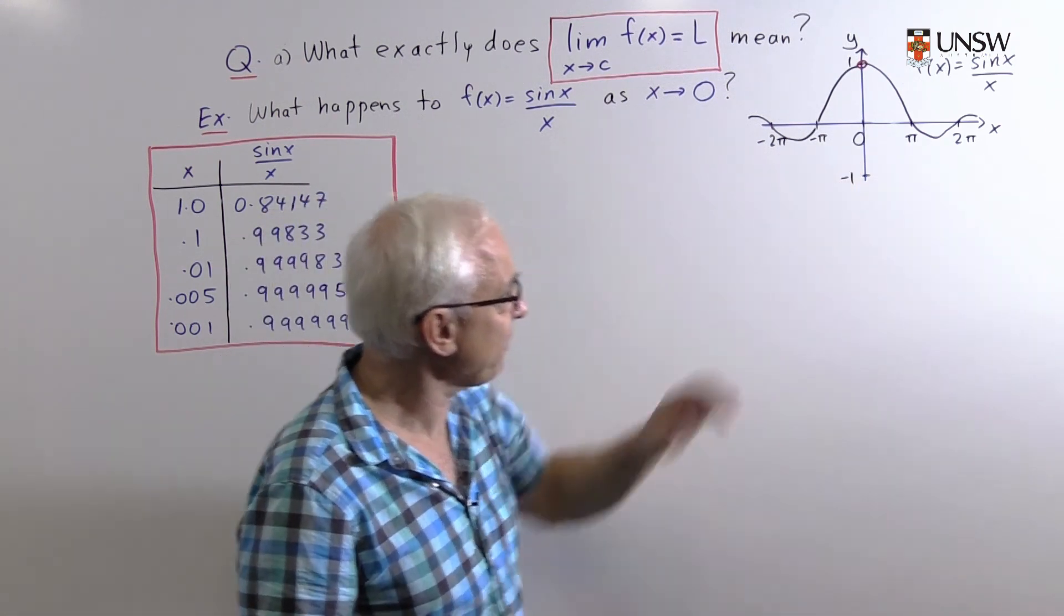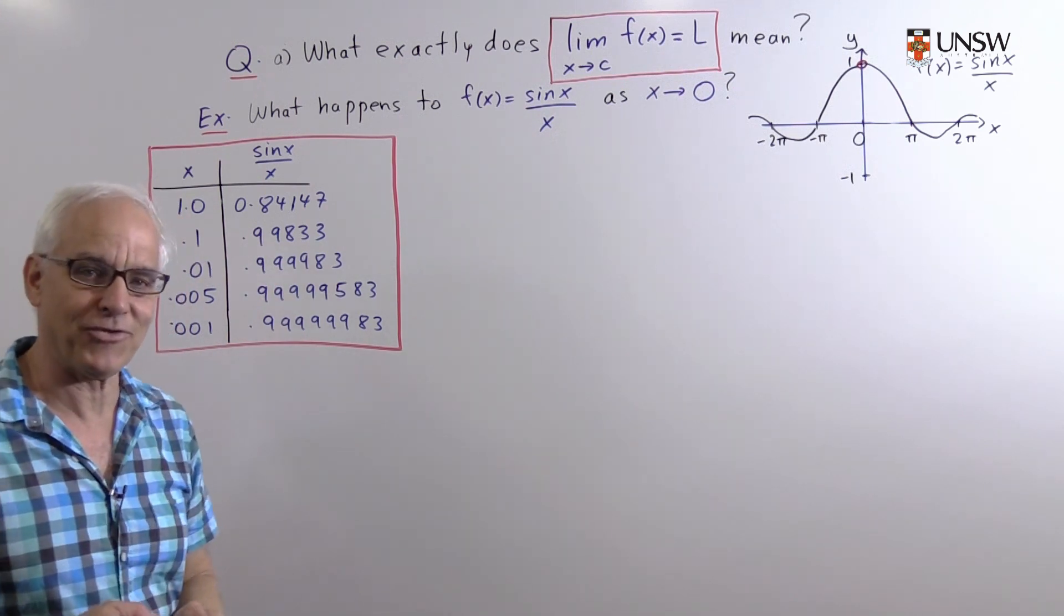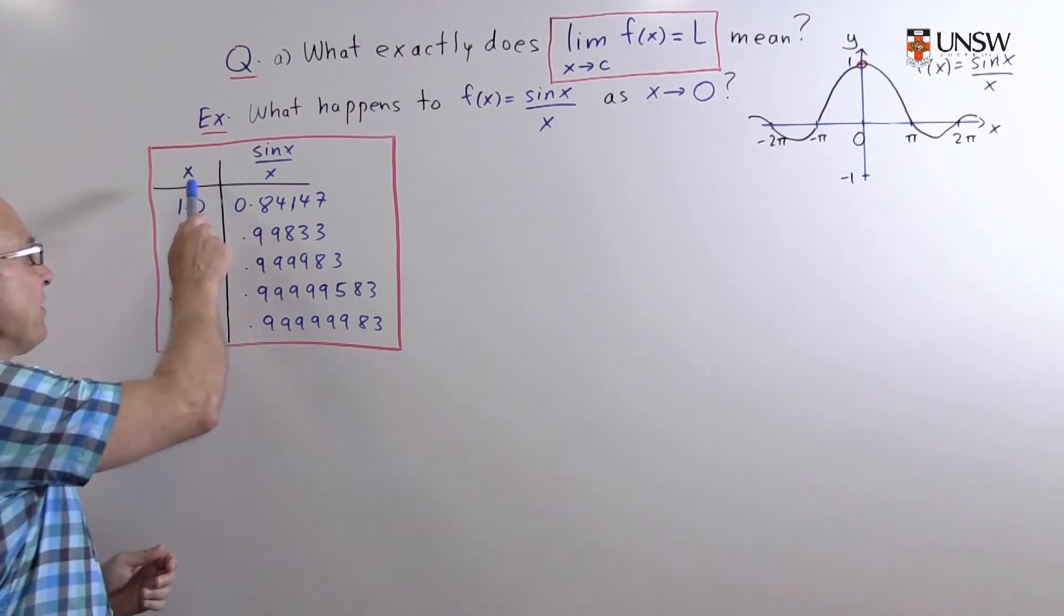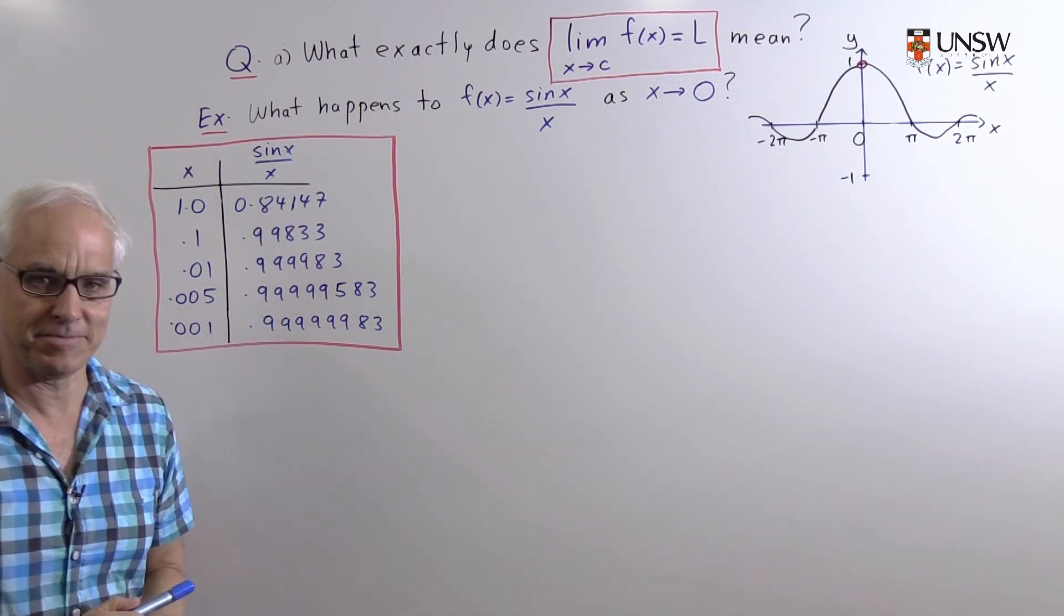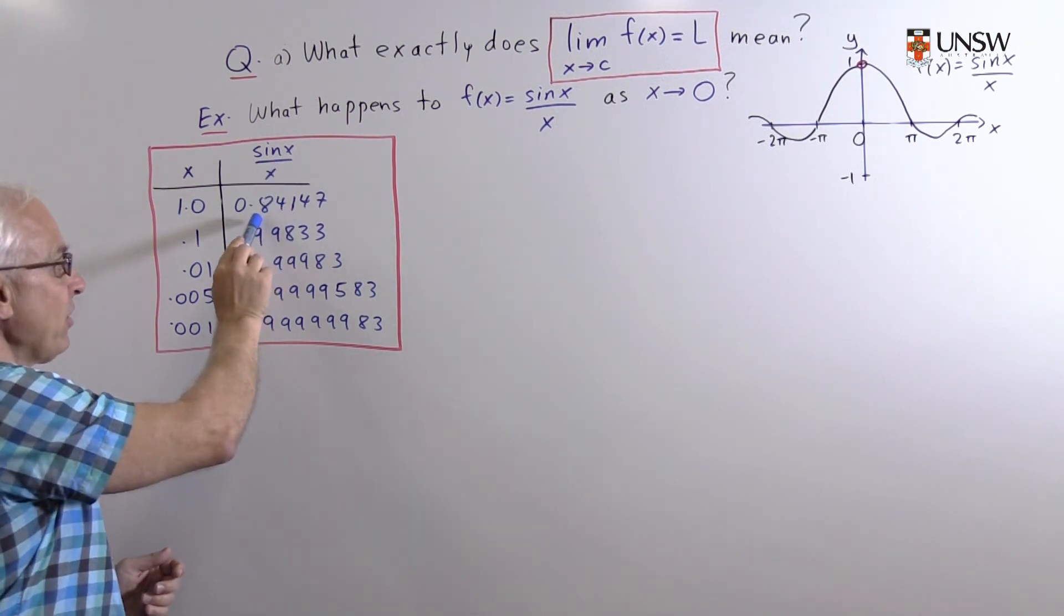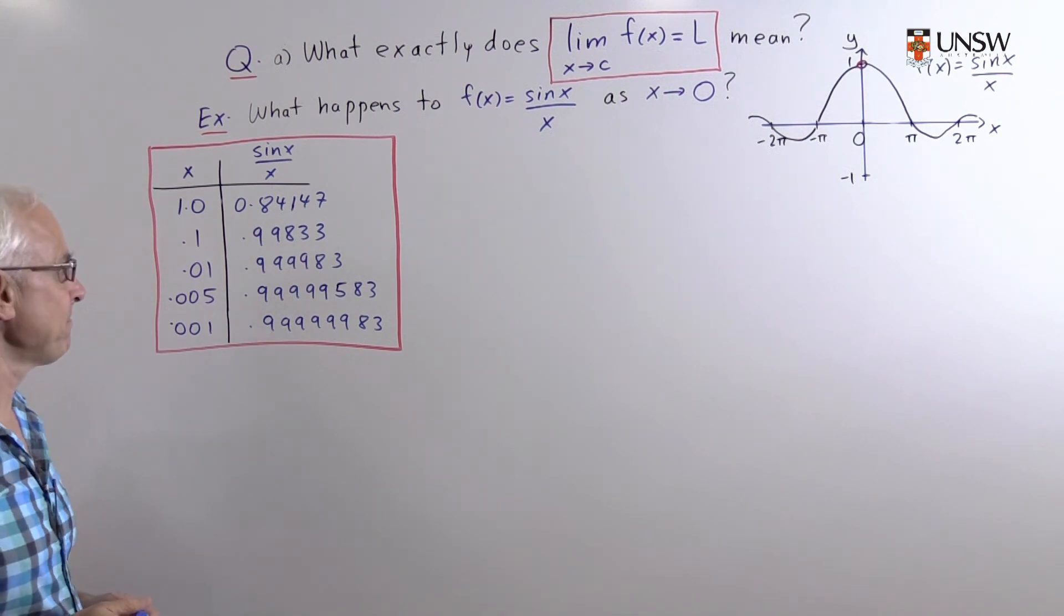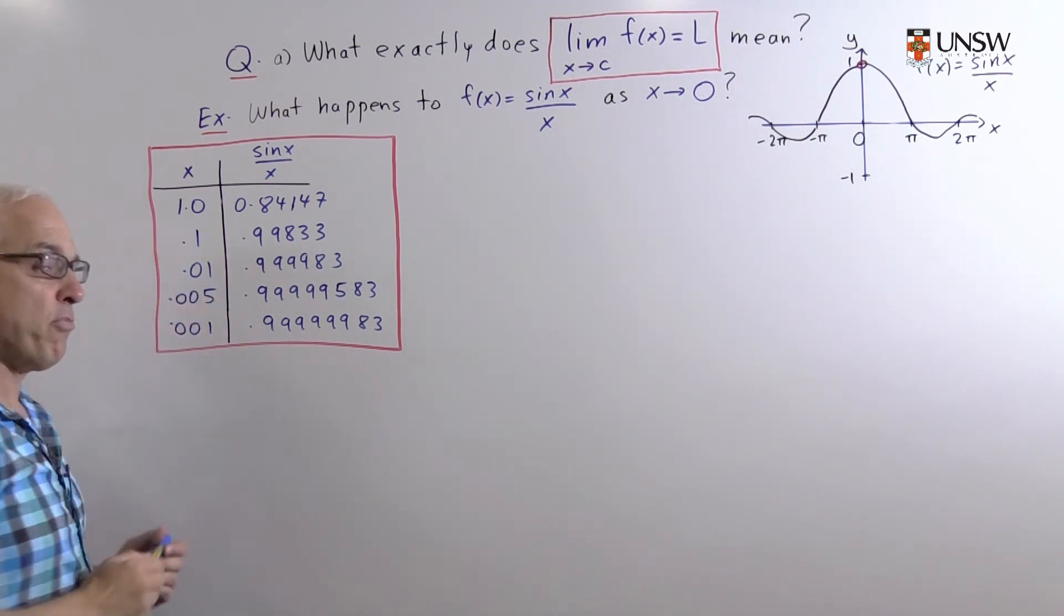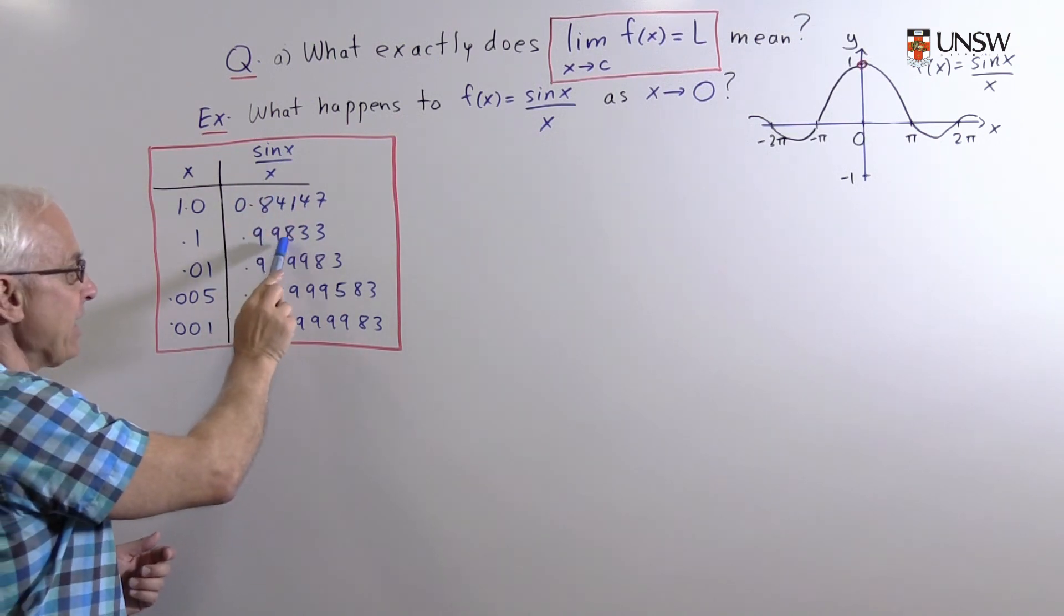Let's look more carefully at the numbers involved. Here's a small table of values which shows us values of x and corresponding values of sine x over x. When x has the value 1, then sine x over x has a value 0.84147 approximately. If we make x smaller to 0.1, then the value of sine x over x becomes 0.99833.